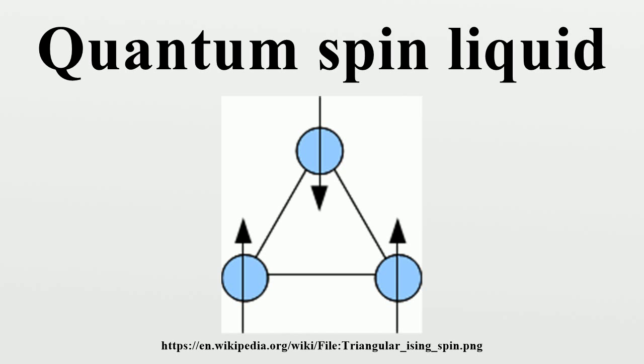The toric code model is yet another realization of Z2 spin liquid that explicitly breaks the spin rotation symmetry and is exactly solvable. Identification in experiments: